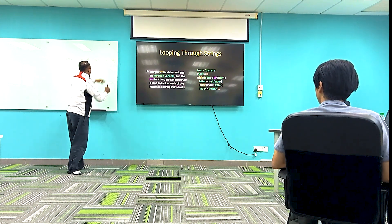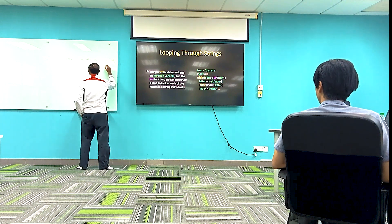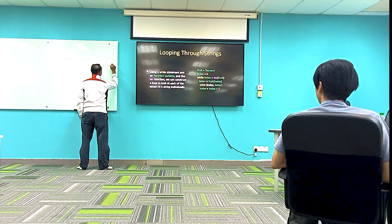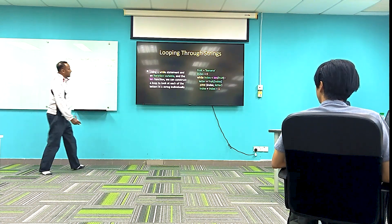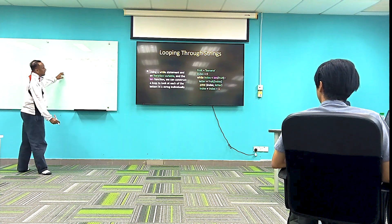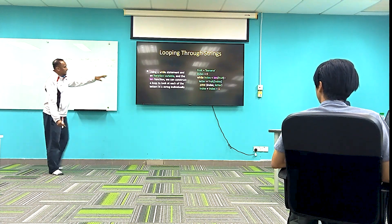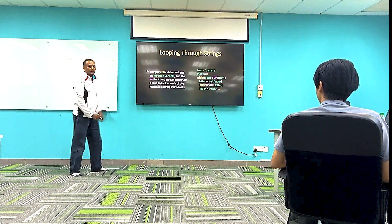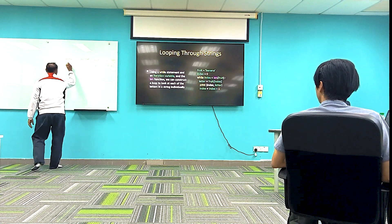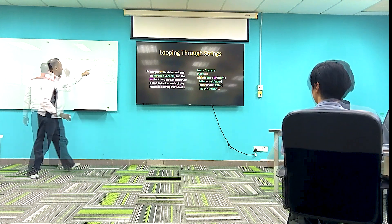So index is zero, and the letter is 'B'. Then index equals index plus one, so index becomes one, then two, then three, four, and five.